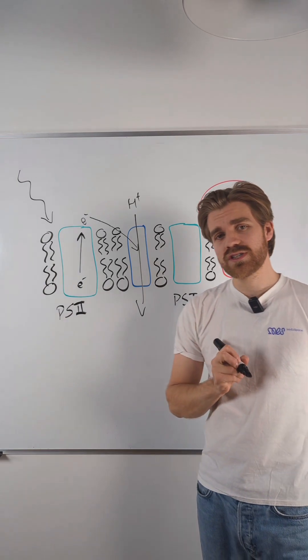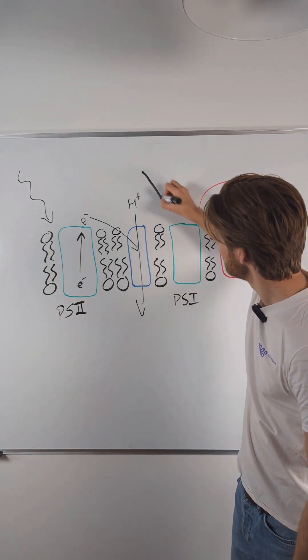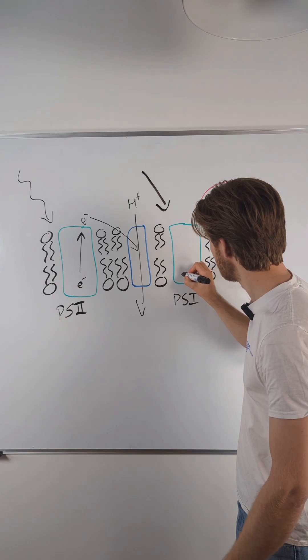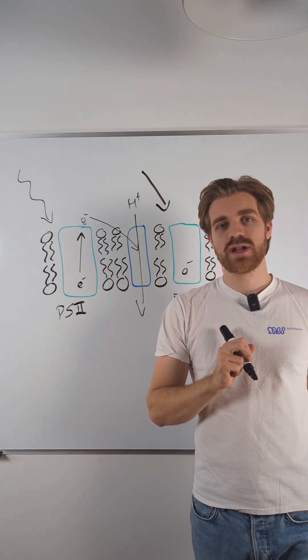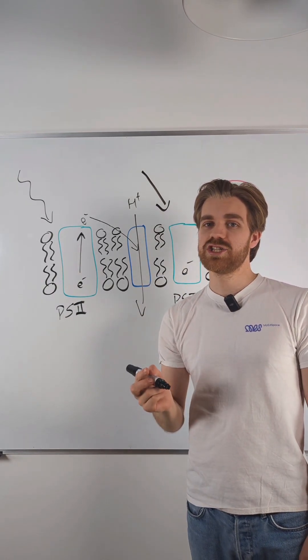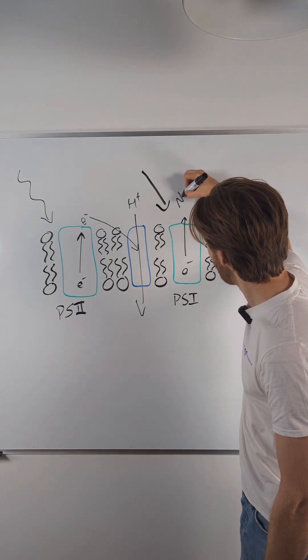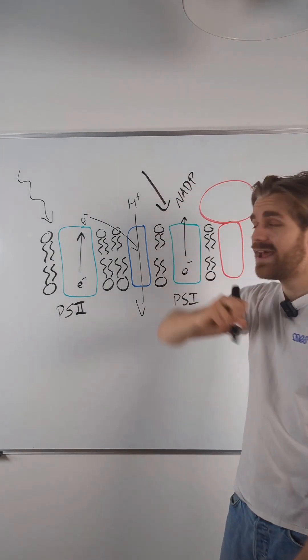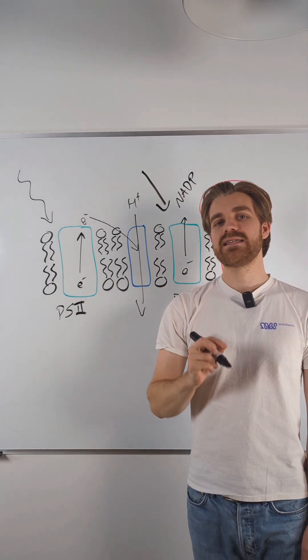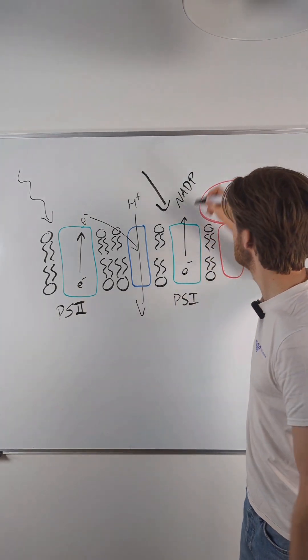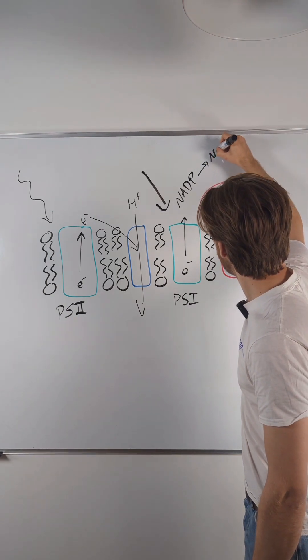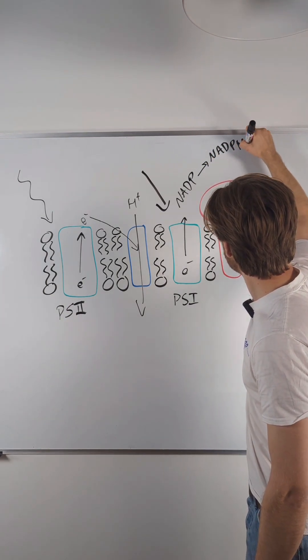At photosystem I the light is going to excite another electron. This electron is now going to be excited to a higher energy level and is going to be accepted by NADP and that NADP is going to be reduced to NADPH.